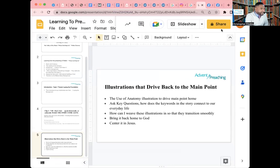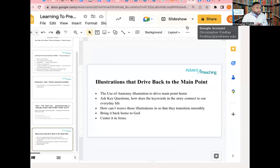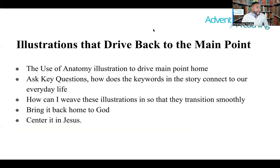Here are the learning points we can take to incorporate into our preaching. First, illustrations must drive back to the main point — we saw the use of anatomy to drive the main point home. Ask key questions: What is the occupation of people that deal with bones? What is the occupation of people that deal with sheep? How does the keyword in the story connect to our everyday life? When looking at keywords like 'bones,' what problems do we encounter with bones, and why are bones important? Weave illustrations so they transition smoothly — it's not just about making an illustration, it's about making one that transitions smoothly. Last but not least, bring it back home to God; center it in Jesus. Those are the keys to making illustrations that drive back the main point.